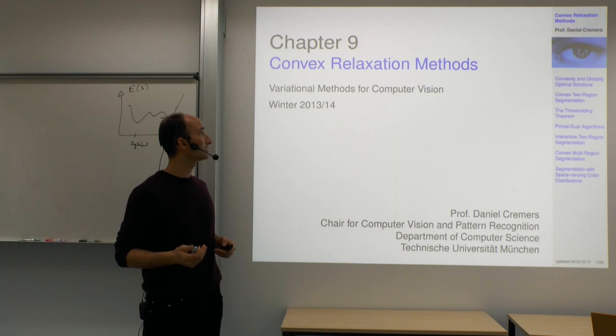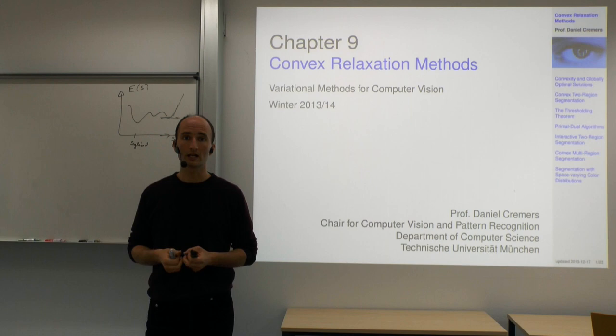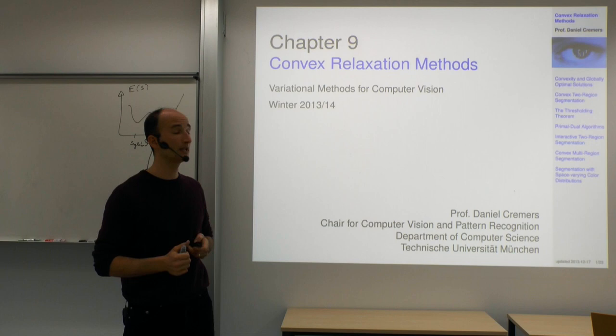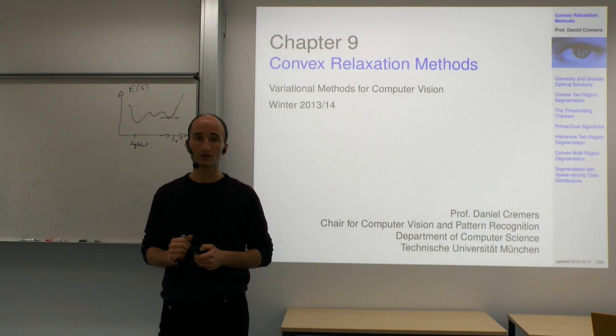Starting in the mid-2000s, people realized that one can actually convexify non-convex approaches — replace the original non-convex formulation by a convex one. Typically one loses global optimality with respect to the original energy, but surprisingly it turned out this is not always the case. There are examples we'll discuss where you have provably optimal solutions.